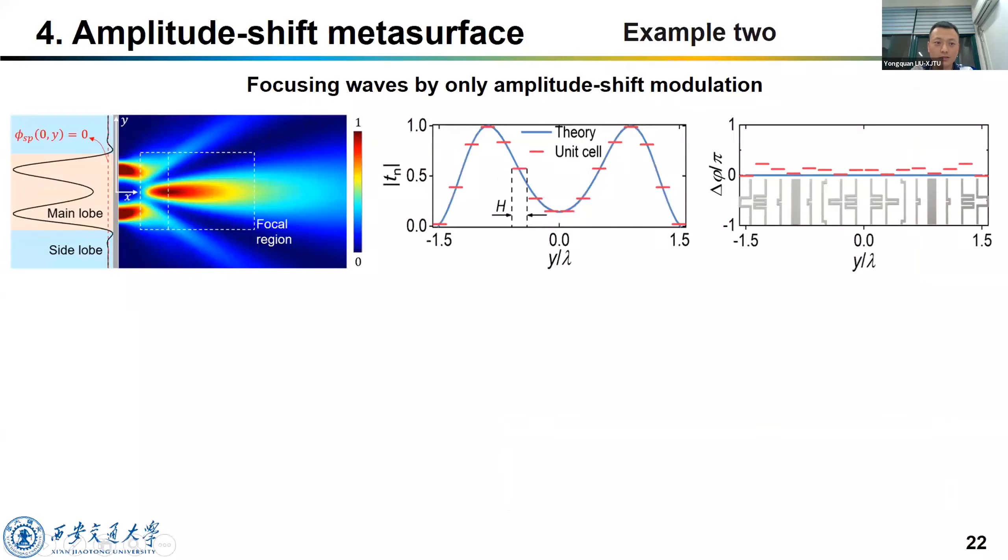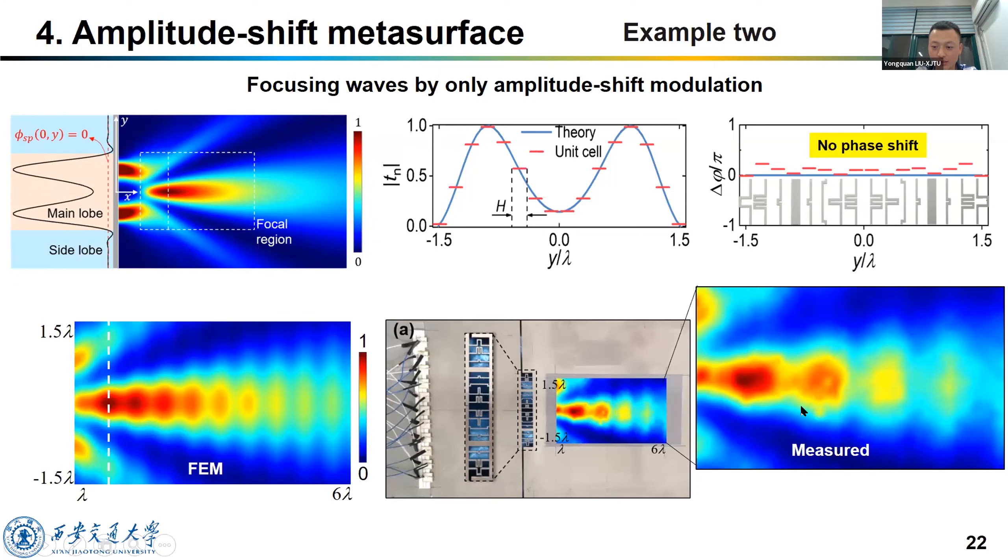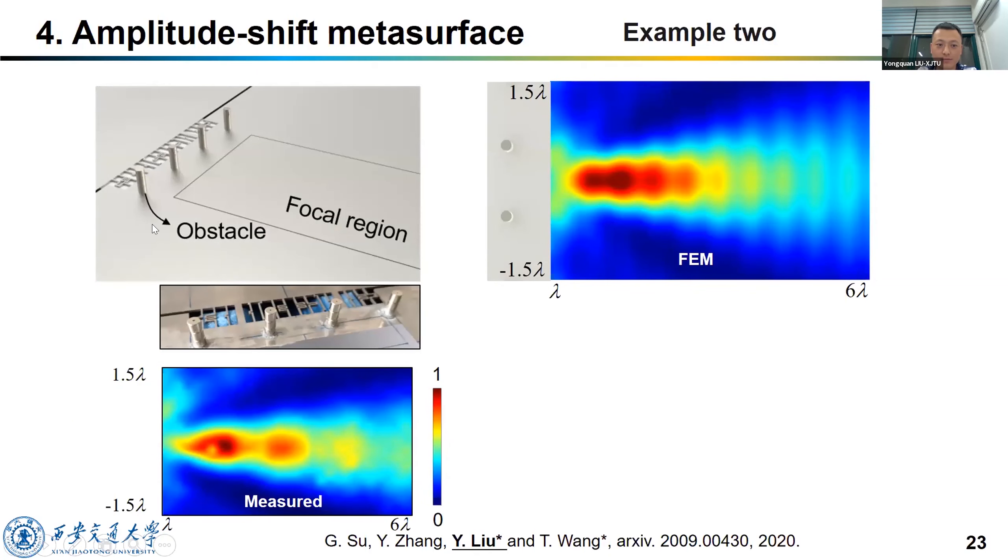Okay, so now the second example is to focus waves by only amplitude-shift modulation. We know that in this case, there is no phase shift at all. And here is the FEM result and our measured result. And we found that if we place some obstacles behind this metasurface, it can also work very well.